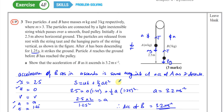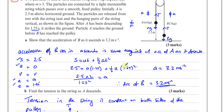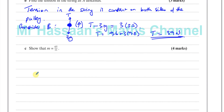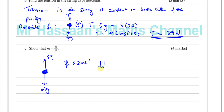Part C asks us to show that M = 65/11. Now we consider particle A. Its weight is MG, the tension in the string is 39 newtons, and it is accelerating downwards at 3.2 metres per second squared. Taking down as positive and applying F = MA: MG − 39 = M × 3.2.